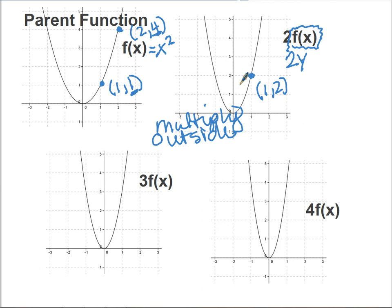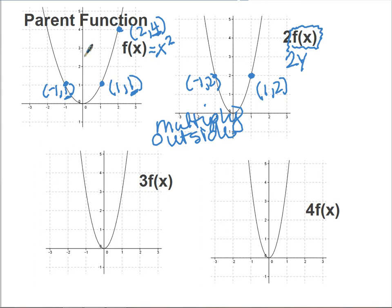The point (2, 4), if I multiply the y value by 2, becomes the new point (2, 8) — a little off my graph, but that's where the next point would be. The point (-1, 1) would become (-1, 2), and so on. I could pick a whole bunch of points from my parent function, multiply the y value by 2, and get a new transformed function — 2·f(x). My new transformed function looks like it got skinnier, but what really happened is called a vertical stretch.